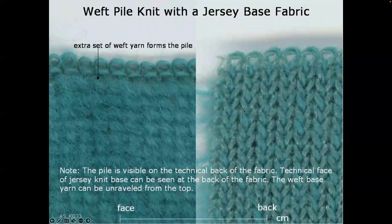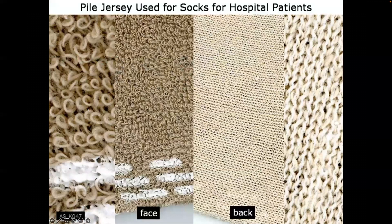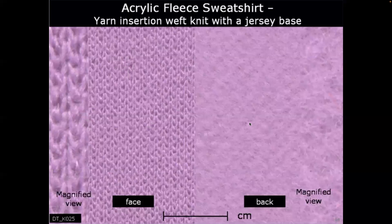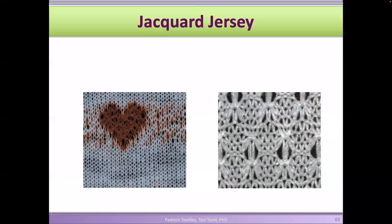These are uncut piles used on hospital socks — a jersey design on the back of the fabric and piles on the wrong side. Fleece fabrics are usually made with piles: on the face you have the jersey pattern, and on the back there are piles that can be brushed to create a more fuzzy surface. This is a jacquard jersey — you use different colored yarns to create a pattern. This is a tuck stitch combined with a jacquard pattern, combining tuck stitches and float stitches to create a design.